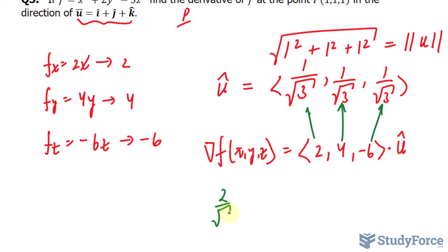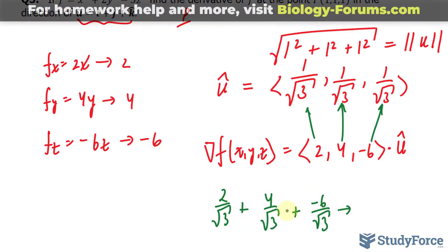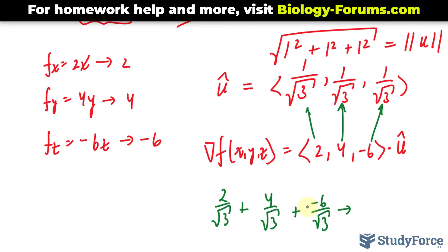2 over the square root of 3 plus 4 over the square root of 3 plus negative 6 over the square root of 3. 2 plus 4 is 6 minus 6 is 0 over the square root of 3.